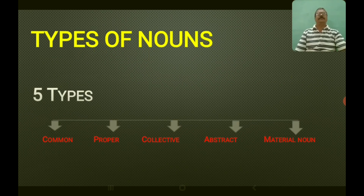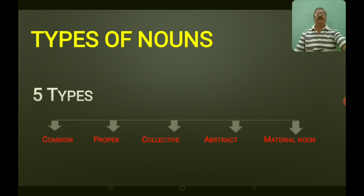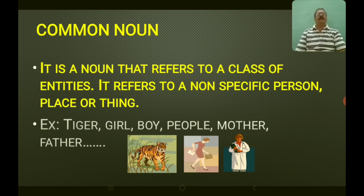There are various types of nouns. How many types? Five types: common noun, proper noun, collective noun, abstract noun, and material noun. In some grammar books you find only four types. The first one is common noun — a noun that refers to a class of entities, or a non-specific person, place, or thing. Examples: tiger, girl, boy, people, mother, father.